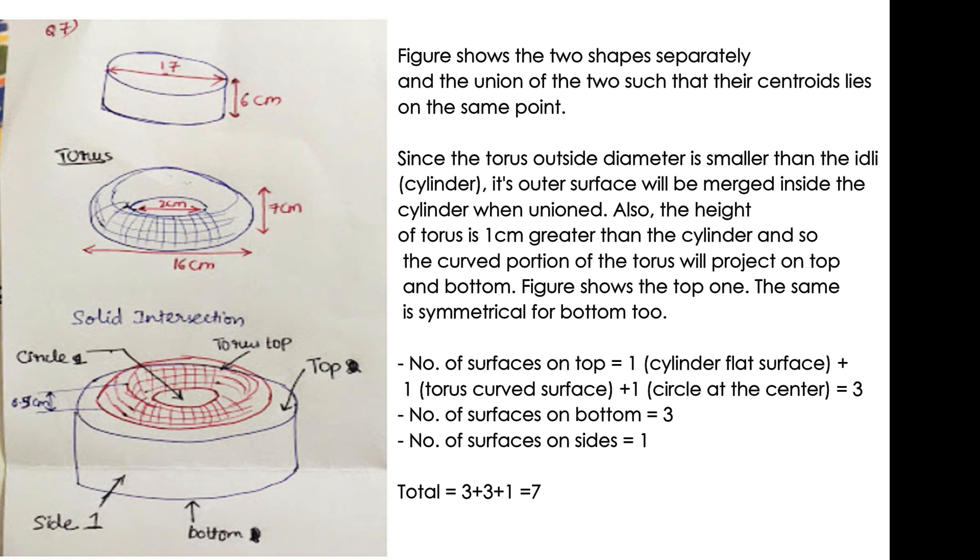Figure shows the top one. The same is symmetrical for bottom too. Number of surfaces on top equals to 1 cylinder flat surface plus 1 torus curved surface plus 1 circle at the center equals to 3. Number of surfaces on bottom equals to 3. Number of surfaces on side equals to 1. Total is 3 plus 3 plus 1, that is 7. So the answer to this question is 7.